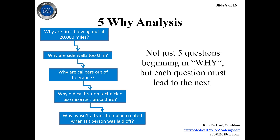The first tool is 5-Why analysis. This example is somewhat similar to what happened in the Firestone tire blowouts that caused some deaths — there was a big lawsuit and recalls. Why were the tires blowing out at 20,000 miles — not right away, not late, but mid-cycle? They were blowing out on the sidewalls, and when they got samples they found the tire sidewalls were too thin. They measured sidewalls in manufacturing and found that the calipers they were using, even though they said it was in spec, didn't match what they were actually seeing. The calipers were out of tolerance.